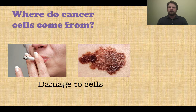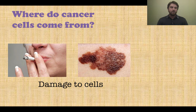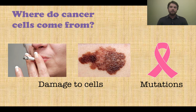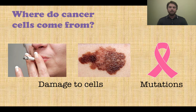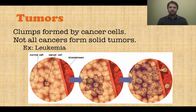Where do cancer cells come from? Cancers can be caused by damage to existing cells — for example, exposure to excess UV radiation causing melanoma (skin cancer), or damage to lung cells from smoking. Cancer cells can also come from mutations that happen after birth or are passed down hereditarily. Breast cancer is a well-known example of a hereditary mutation in the BRCA1 and BRCA2 genes.